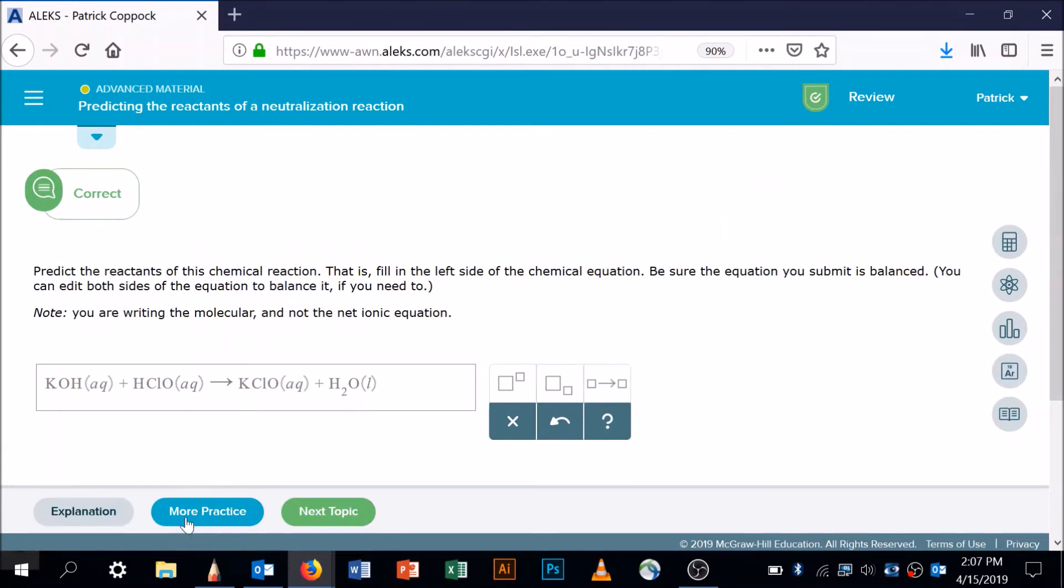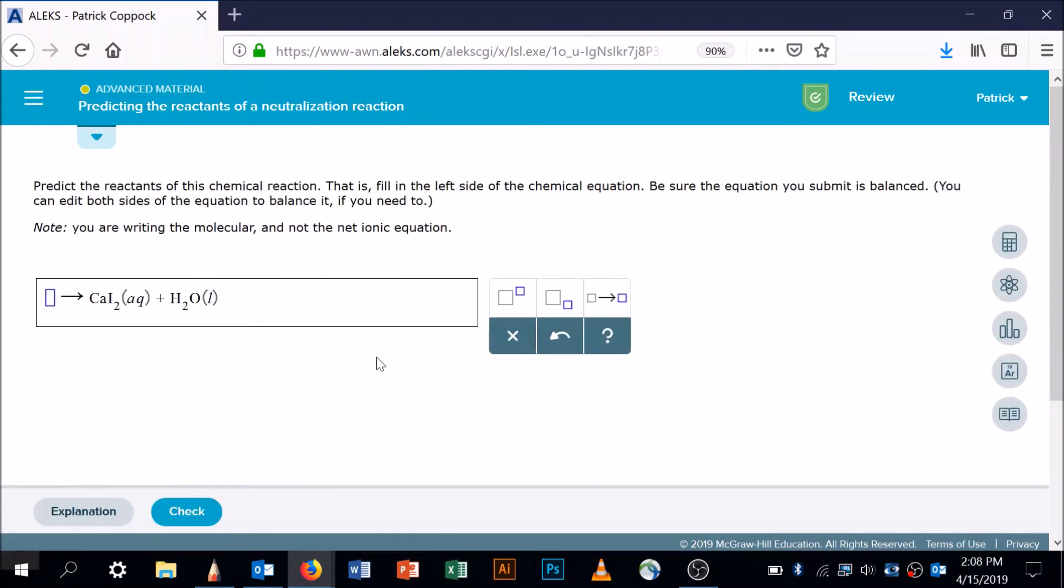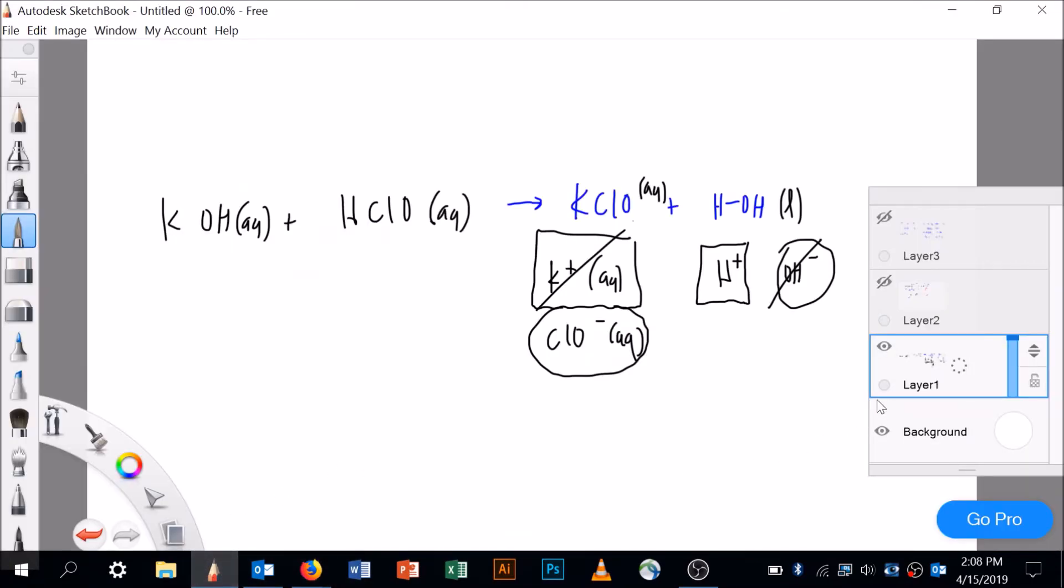What's the next example? More practice. So we'll do the same thing here - calcium iodide. Let's come back over to our notepad and let's just do it in a different color.